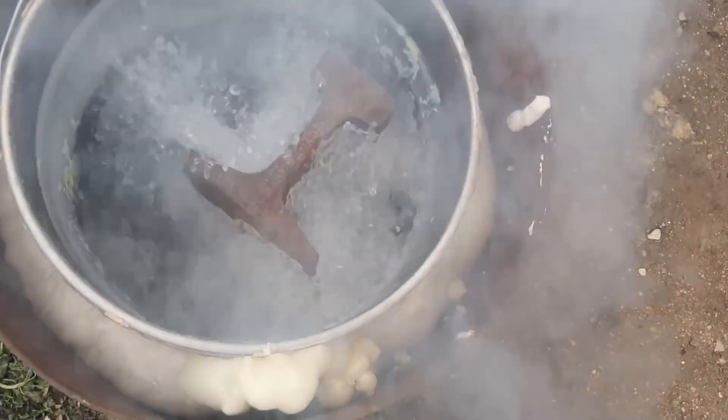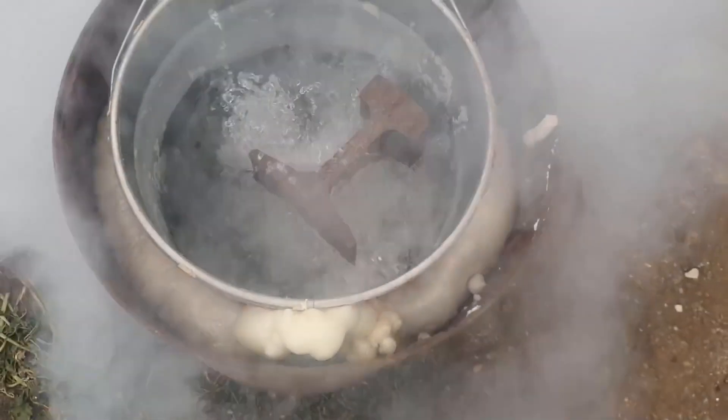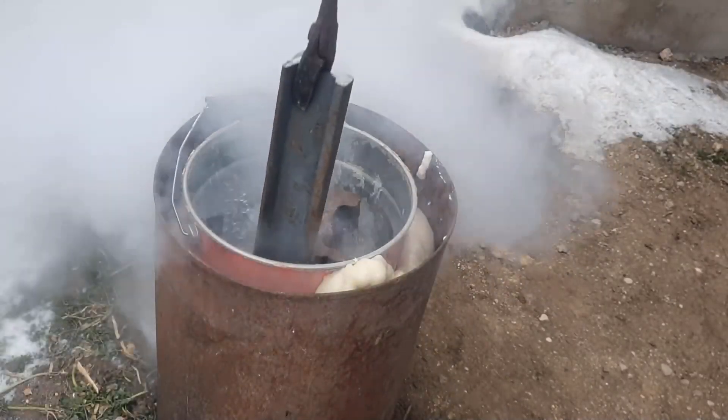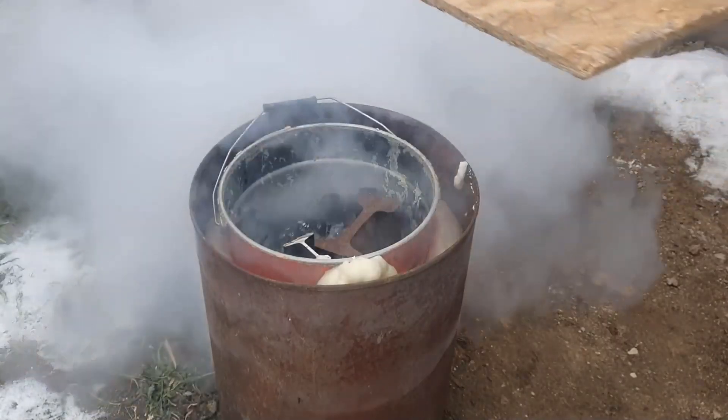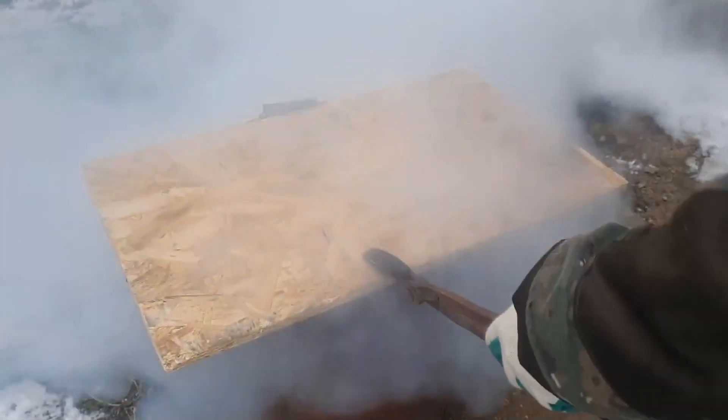The temperature of liquid nitrogen is almost minus 200 degrees, and when we immerse the rail there, the temperature difference which is zero degrees causes such bubbling. This is equivalent to the fact that we'll immerse a rail with the temperature of 300 degrees in boiling water.